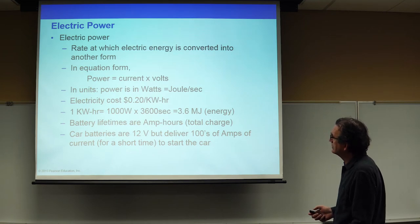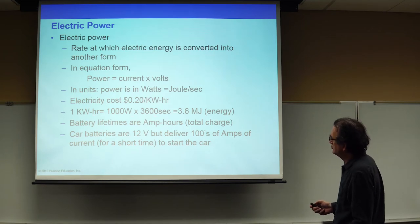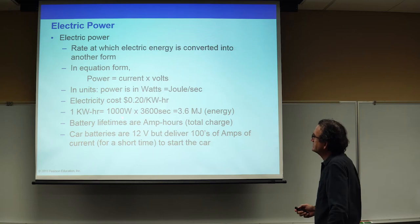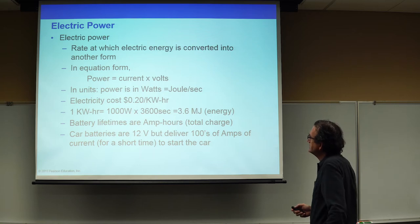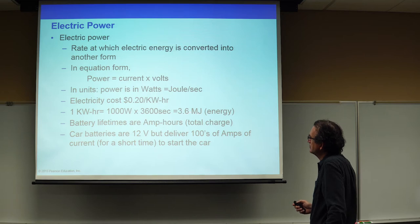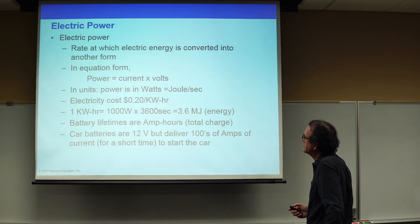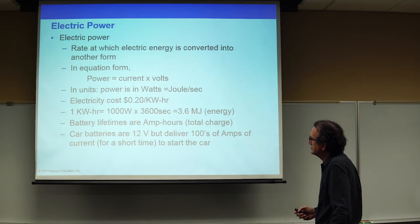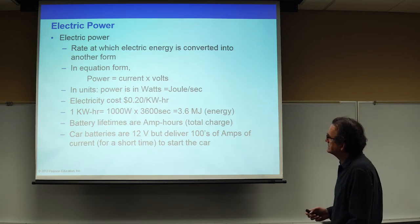A kilowatt hour can also be converted to joules. It's 1,000 watts, and an hour is 3,600 seconds, so that's 3.6 megajoules — 3.6 million joules is a kilowatt hour.